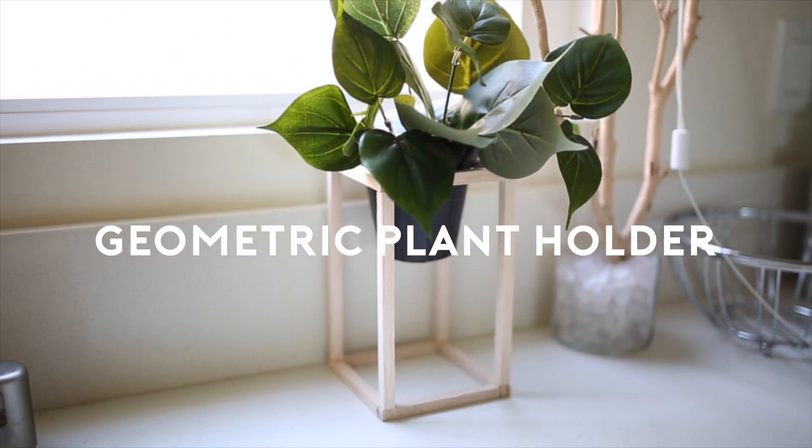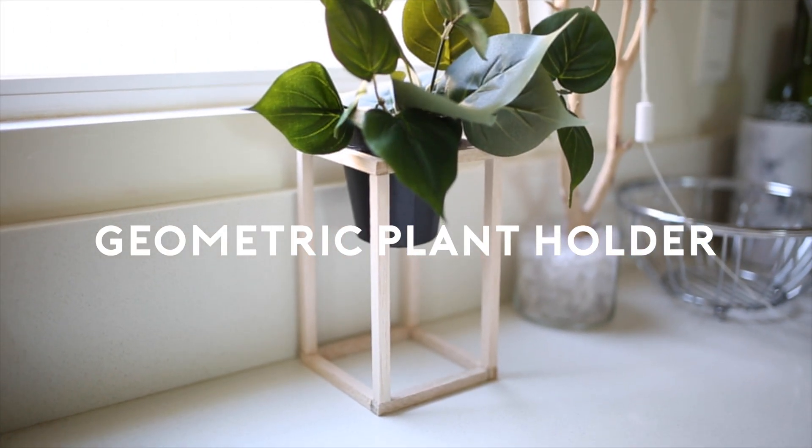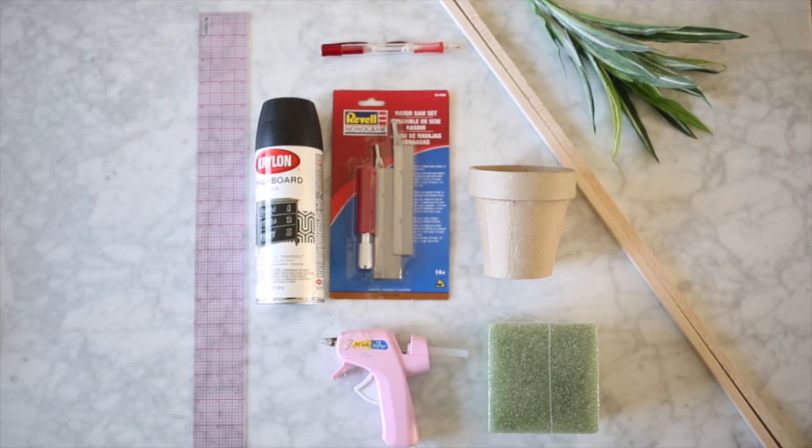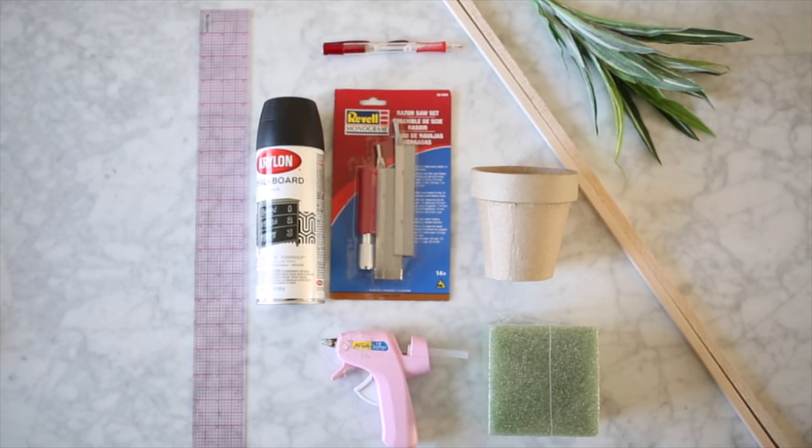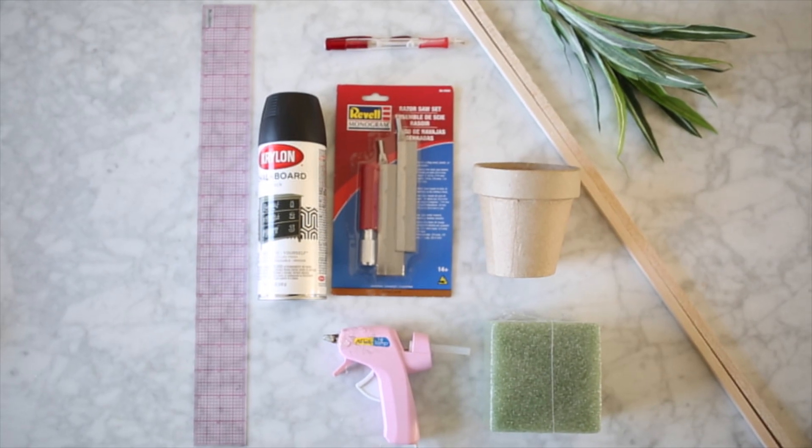For this next DIY, we're going to be making this geometric plant holder. For this, you're going to need some wooden dowels, spray paint, a mini saw, a paper mache pot, some foam, a fake plant, a hot glue gun, and a ruler.